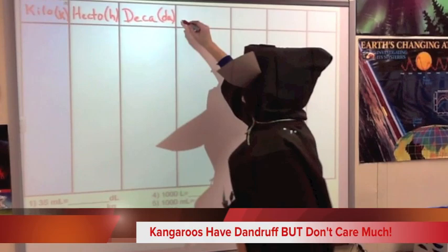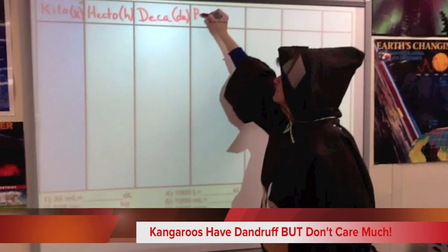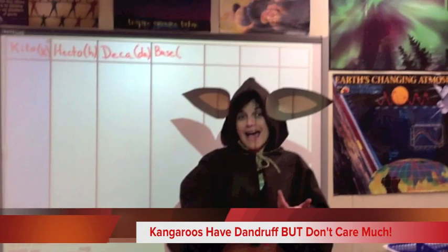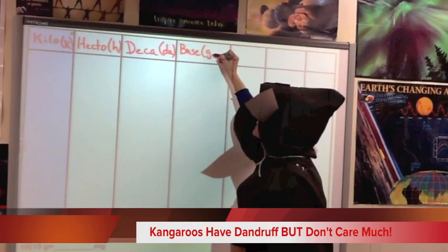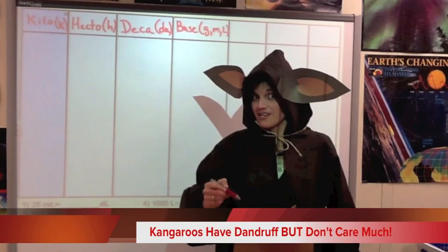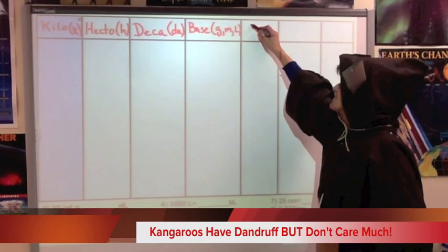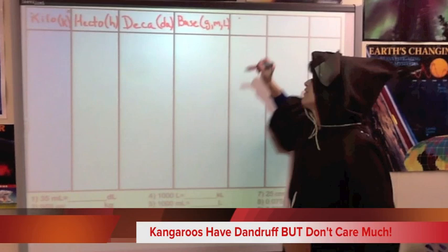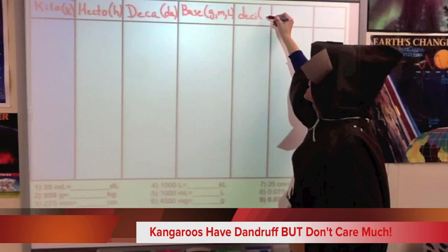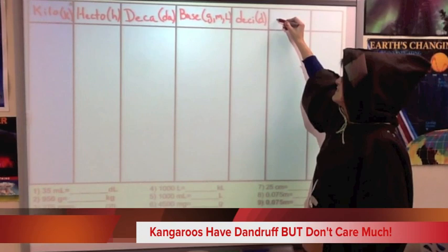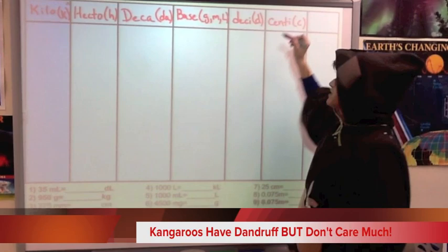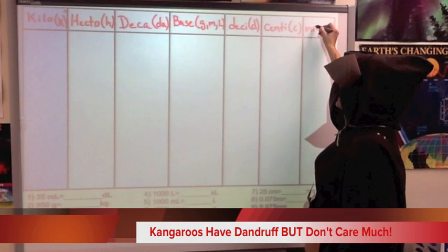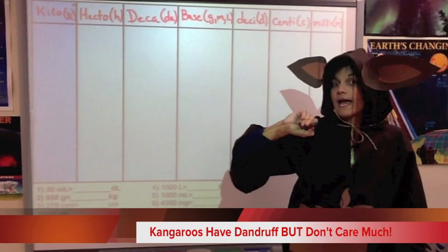Right in the middle of our chart is going to be the base units. Our base units for mass, length, and volume are grams, meters, and liters. Going to the other side of the chart, we're going to be using prefixes that are smaller than one base unit — smaller than one gram, one meter, or one liter. The next one is deci, just a little d as a symbol. Then we have centi, small c for our symbol, and then finally way over at the right-hand side is our milli prefix, which is just a small m.